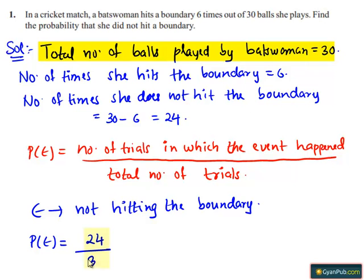Which is 30, which equals 4 divided by 5, that is 0.8. Therefore, the probability that she did not hit a boundary is 0.8.